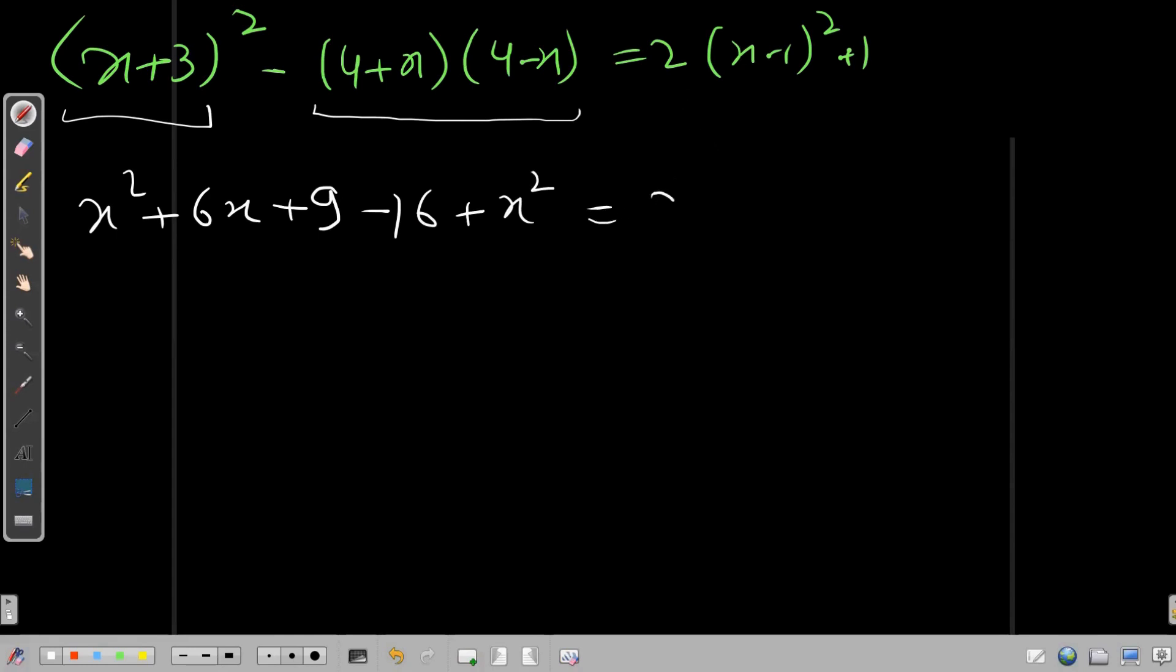So in this side we have 2x² - 4x + 2 + 1. I did a mistake - I didn't multiply the 2 with the 1.